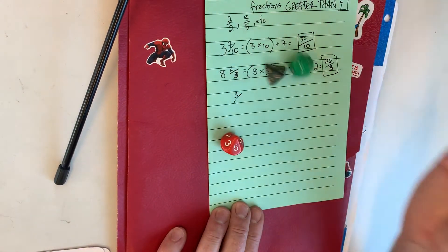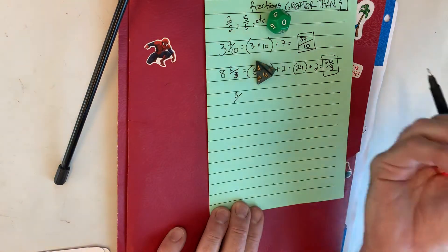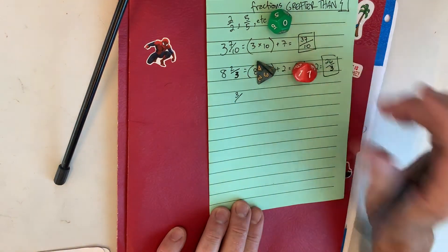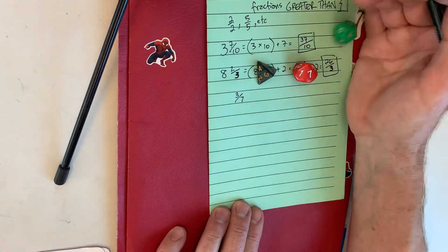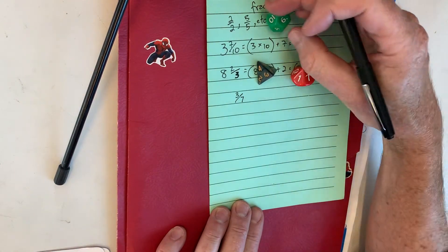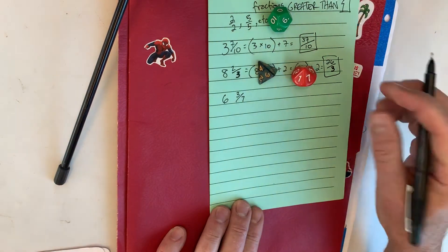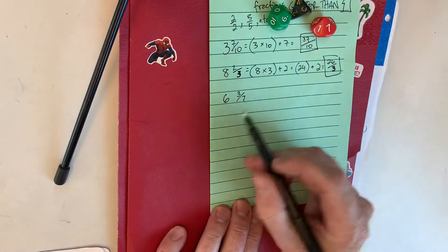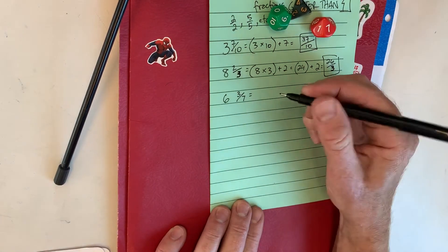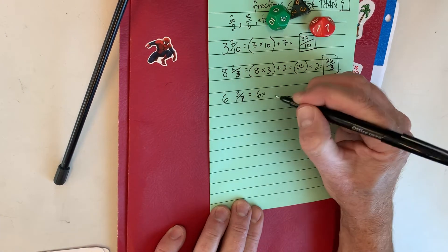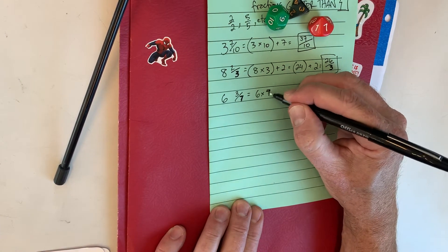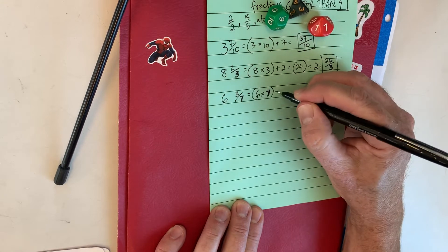My denominator... zero. Oh, maybe I'll do seven as my denominator. I haven't done that yet. But zero is no good. I don't want you to roll a one or a zero for any of this; it'll make it just too easy. So six and three-sevenths is... seventh is the denominator. Six times the denominator, and add three.